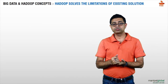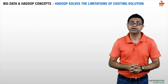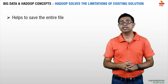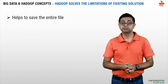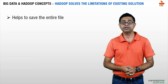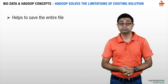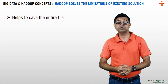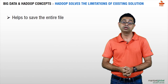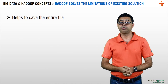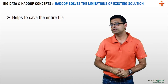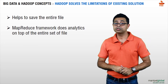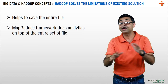Let's see how Hadoop solves the limitations of existing solutions like RDBMS-based data warehousing. First, as you might have guessed, it helps you save the whole file — HDFS helps you save it. The second part is: no matter how big your file is, you have a framework that will help you do analytics on top of the entire dataset. Unlike data warehousing, you don't have to cut out portions and do analytics on a subset — MapReduce helps you do analytics on the entire population of data.